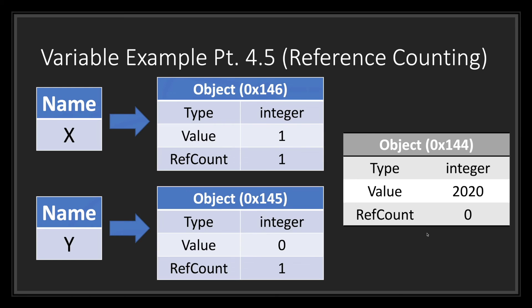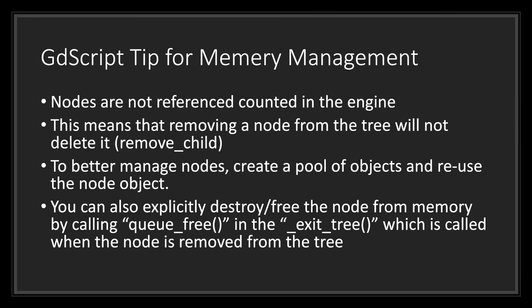This is basically Godot's way of memory management. One important tip: nodes in Godot are not reference counted in the engine. Removing a node from the tree will not delete it — many people use remove_child thinking it removes it from memory, but this is not the case. To better manage nodes, create a pool of objects and reuse the node object. You can also explicitly destroy a node from memory by calling queue_free in the exit_tree callback, which is called when the node is removed from the tree.